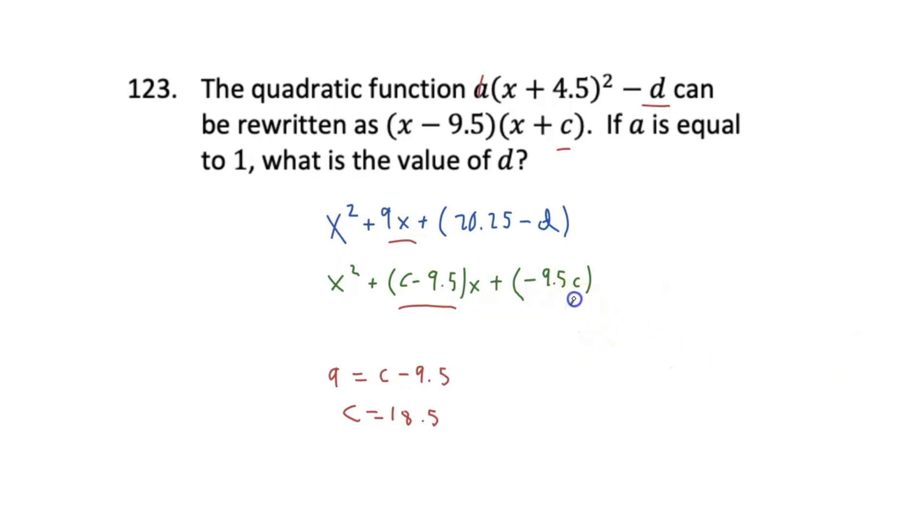So what we can do is 18.5 times -9.5, which will give us -175.75. And so now when we go ahead and set this part of our quadratic expression equal to this part of the quadratic expression, we only have one missing term, that being d, which we can pretty easily solve for. So if we set -175.75 equal to 20.25 - d, and now we can just solve for d. In this case, d would be equivalent to 196. And that is the answer to this problem.